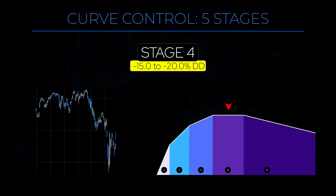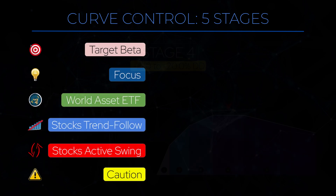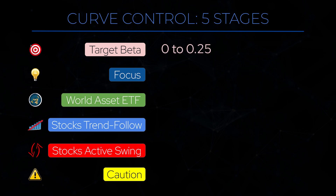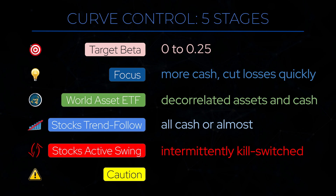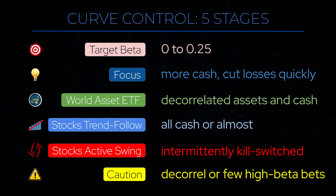Stage 4 is the all-out panic sell-off, a drawdown between minus 15 and minus 20%. The overall net portfolio beta should now have fallen to between 0.25 and 0, and your focus should be almost exclusively obsessive over minimizing losses. The ETF asset allocation system should be allocated between cash and a few decorrelated assets decoupling from equities. All trend-following strategies should have had their kill switch turn them to cash, and your swing trading strategy will become very hairy, being kill-switched on and off to avoid getting caught in volatility spikes. Cash in the portfolio should be at least 50%, with low exposure traded for only a few high-beta positions to partially capitalize on meaningful short-term market rebounds.